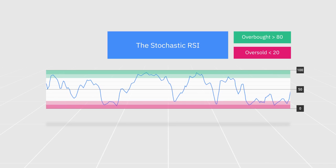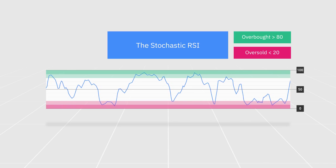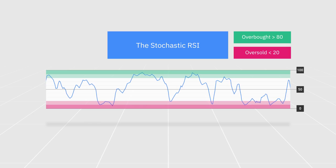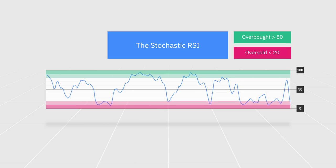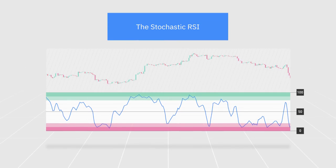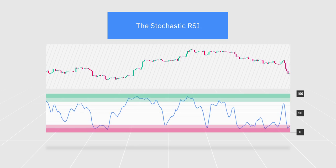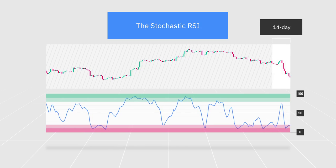Charts with a 0 to 100 setting may look slightly different, but both variants are interpreted in essentially the same way. The most common time setting for stochastic RSI charts is a 14-period.